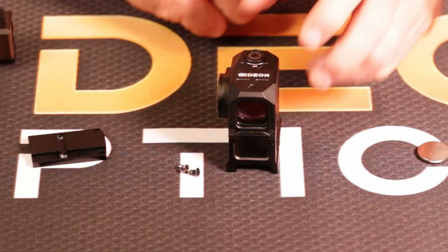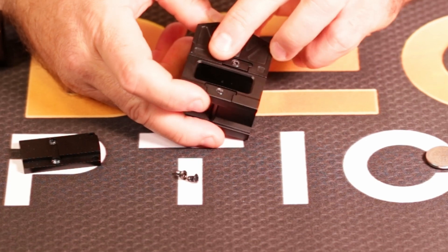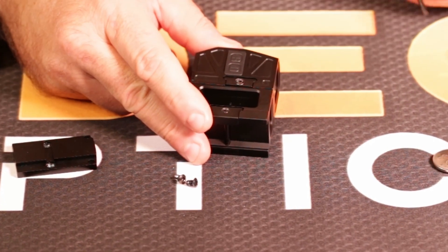Get rid of the slide here for a second. When you get your mediator out of the box, you're going to see it comes on this absolute co-witness riser mount, and we need to pull it off of that riser mount if we're going to put it on this Glock slide.